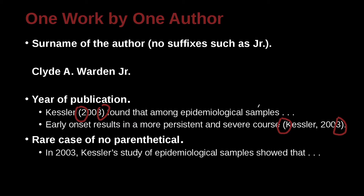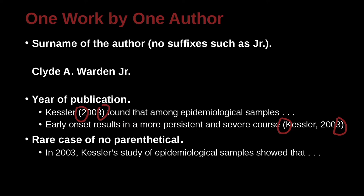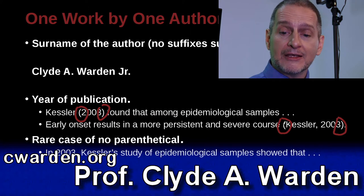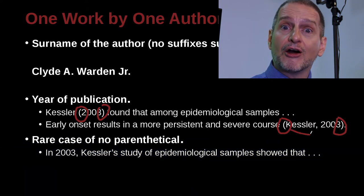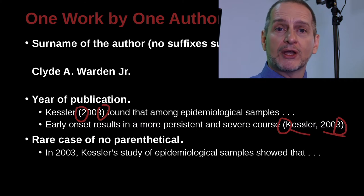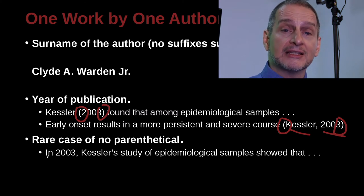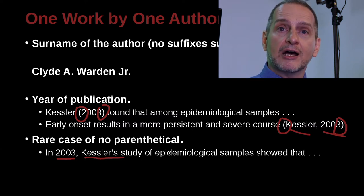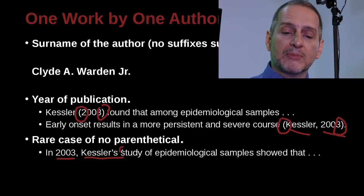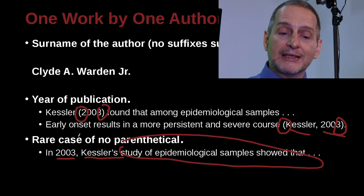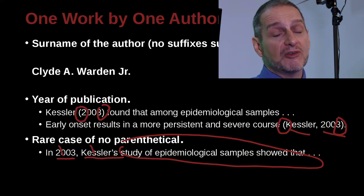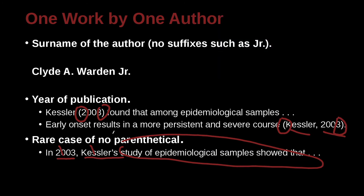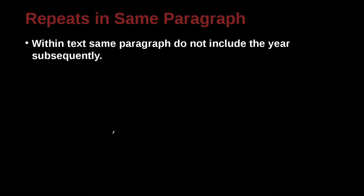Sometimes you can get away without using parentheses at all, but this is a very rare case. It's hard to write this way. It's much easier to just write the ideas and then include an open and close parenthesis with the author and date — that's the easiest way to write your sentences. A harder way would be: 'In 2003, Kessler's study of this did something.' There's the year, there's the author, and that's everything we need — no parentheses needed because we've already included both. That's a rare case, and you won't do it much, especially when you have many references, which you should for good quality research.